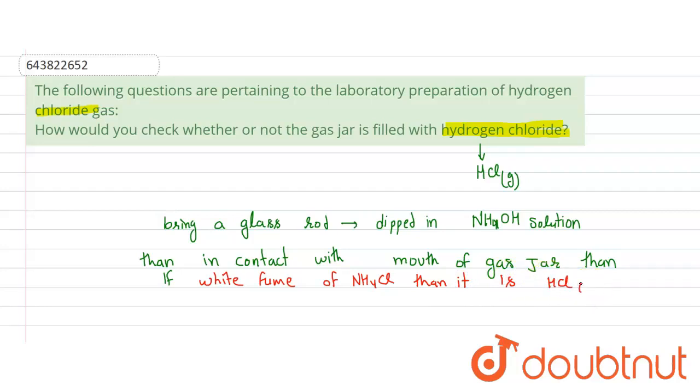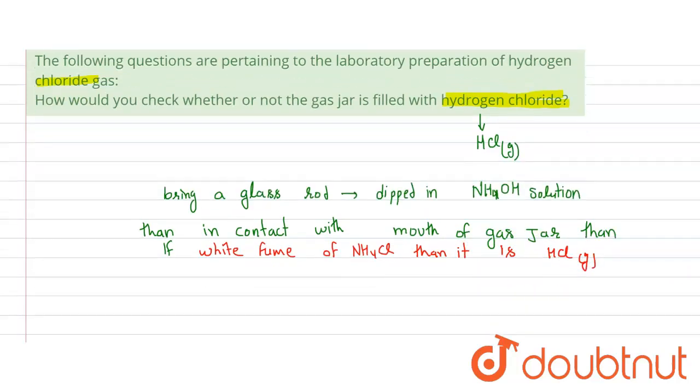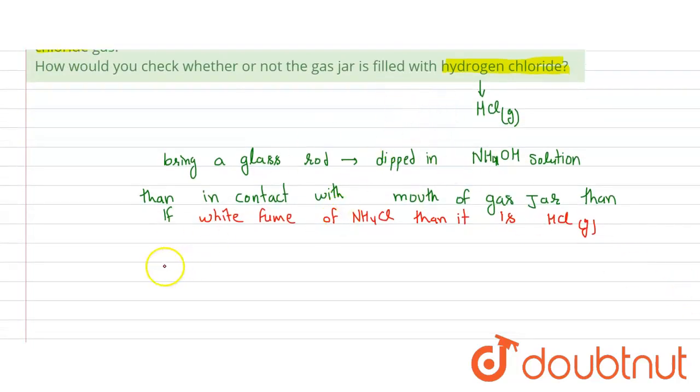This is the testing of HCl gas because NH4OH on reaction with HCl produces white fume of NH4Cl and also H2O. So it is the white dense fume.